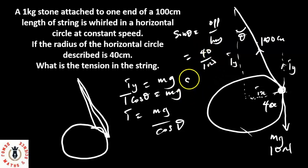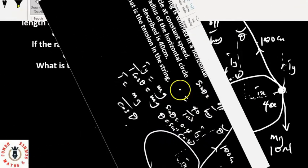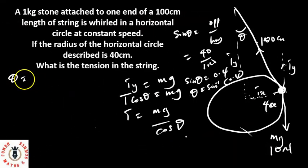Now θ is equal to the arc sine of 0.4. So that's θ. θ is equal to the sine inverse of 0.4.